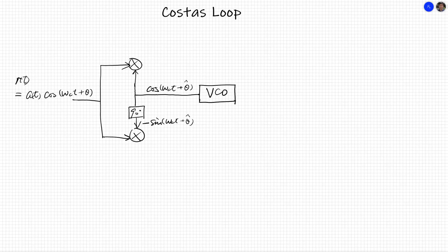This downconversion sinusoidal signal is coming from the VCO. The demodulated signal at the top branch will go through a low-pass filter and becomes gamma A T cosine theta minus theta hat. The demodulated signal at the bottom branch will also go through a low-pass filter, and the output is gamma A T sine theta minus theta hat.